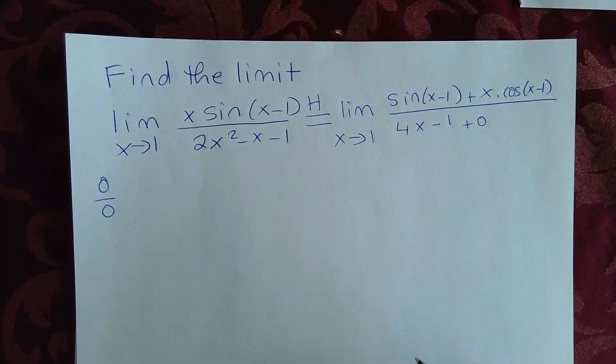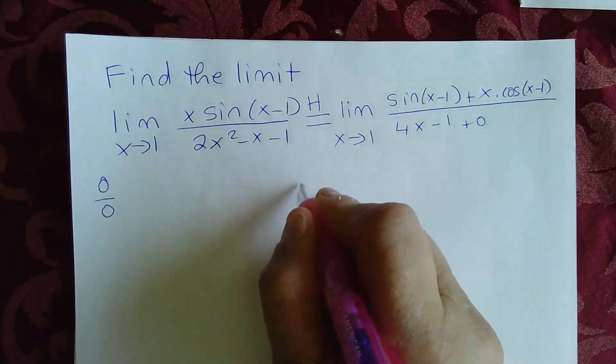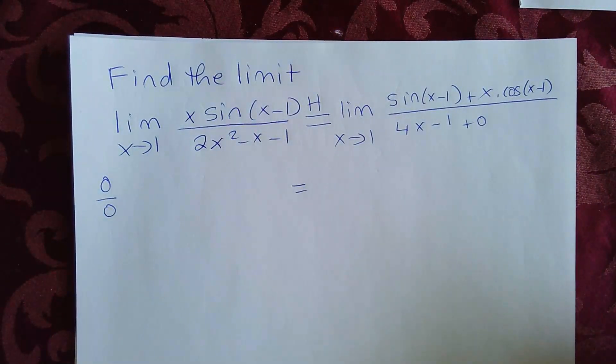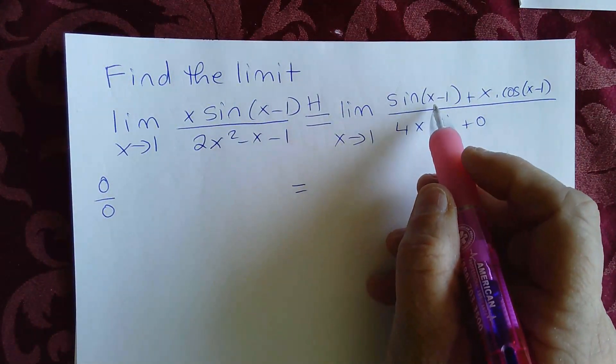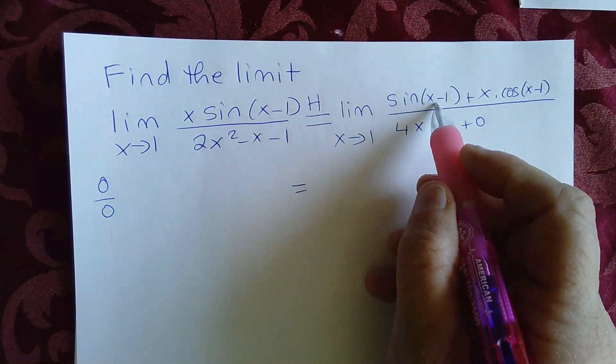Now what do we have here? Can we plug in 1 for x? We can use direct substitution here. Let's go ahead and try to do that. So if we plug in 1, 1 minus 1, that's 0, sine 0 is simply 0.